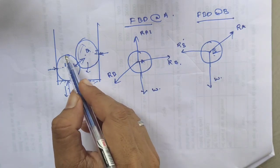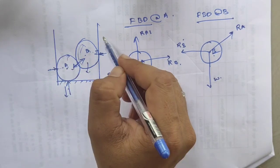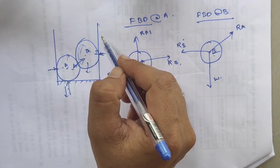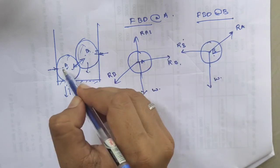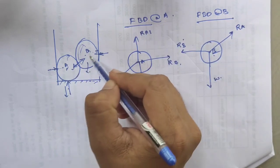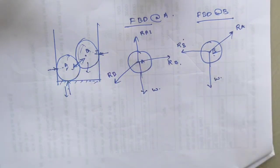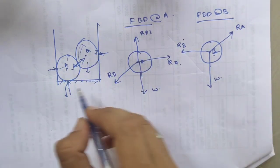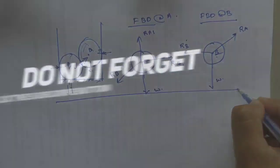When we get a problem like this, we have to draw the free body diagram twice — once at the first body and once at the second body. I hope everyone understood about the free body diagram.